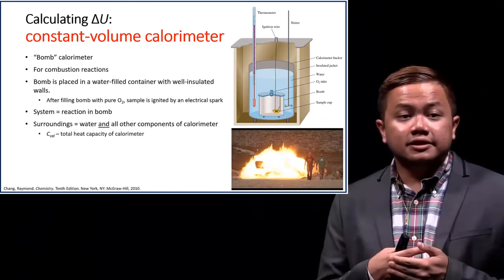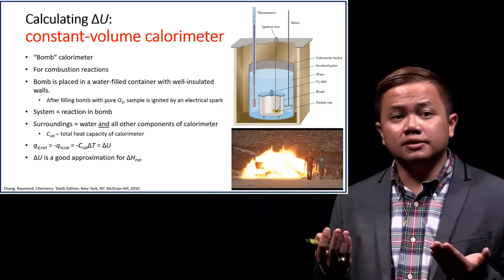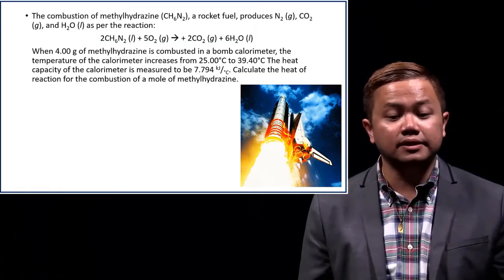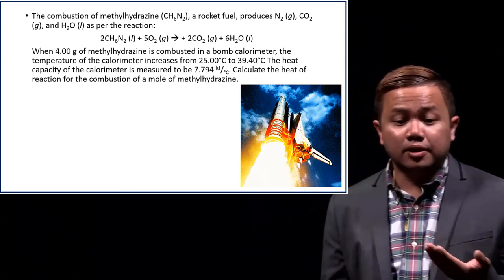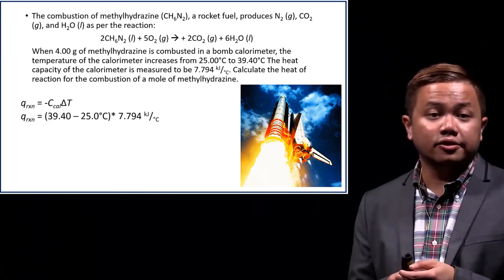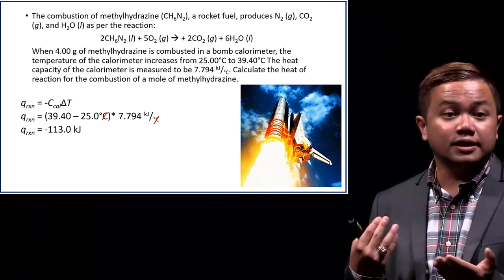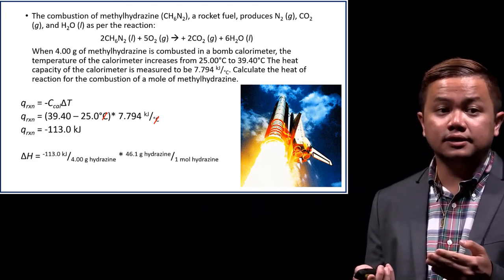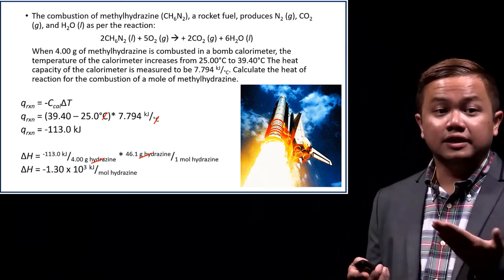For most cases, delta U is a good approximation for the change in enthalpy of combustion reactions, since the process occurs at constant volume and no work is done. For the problem asking us to calculate the heat of combustion of a mole of hydrazine: using the equation, the changes in temperature, and the heat capacity of the calorimeter, the heat of reaction is −113.0 kilojoules. Converting 4 grams of hydrazine to moles gives us −1.3 × 10³ kilojoules per mole of hydrazine.